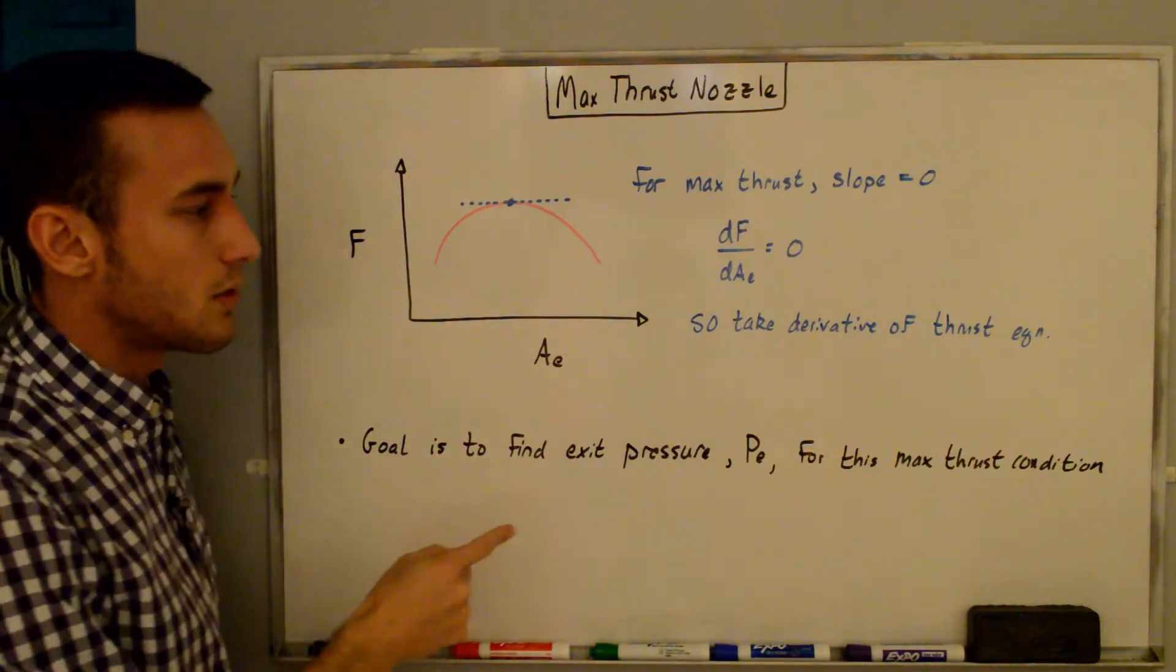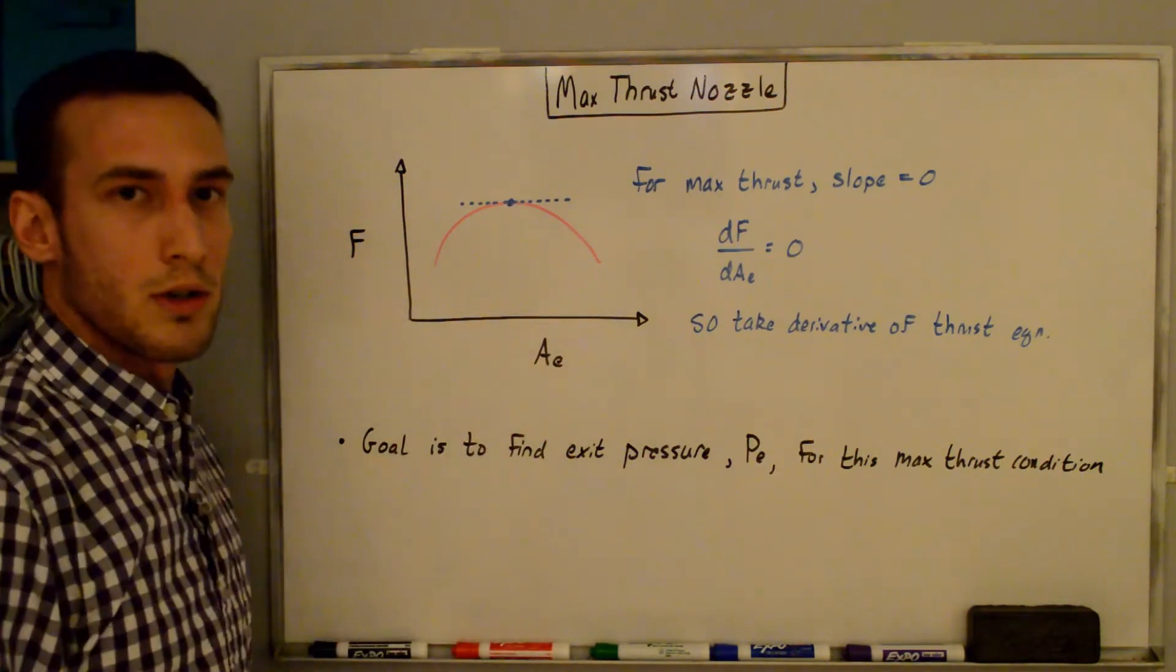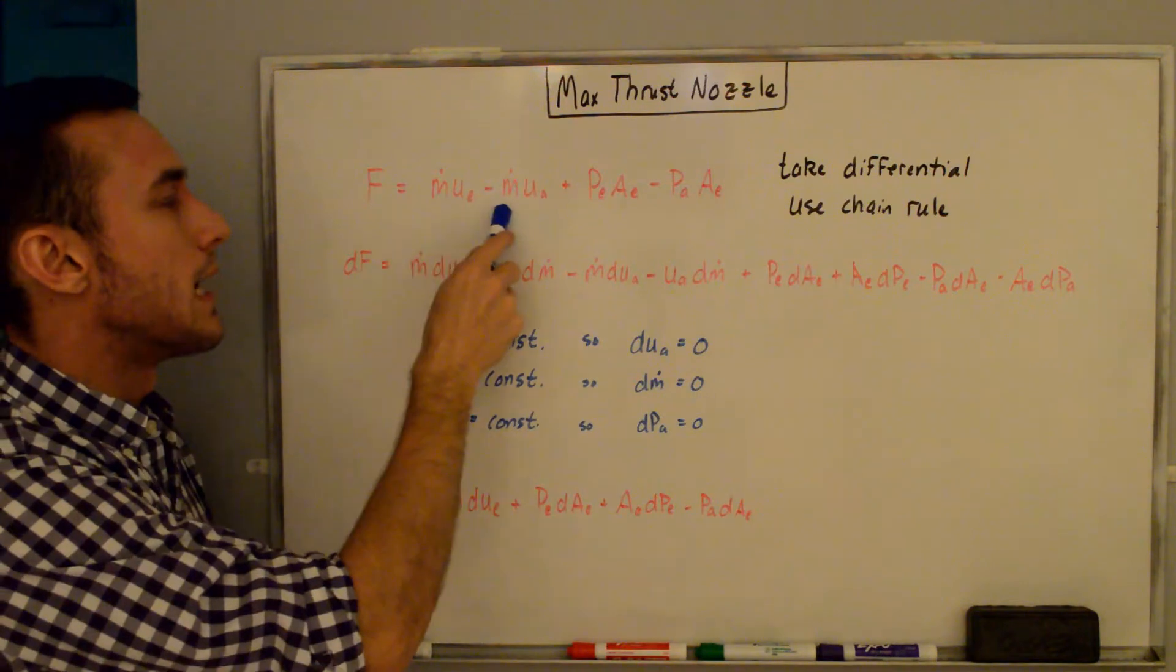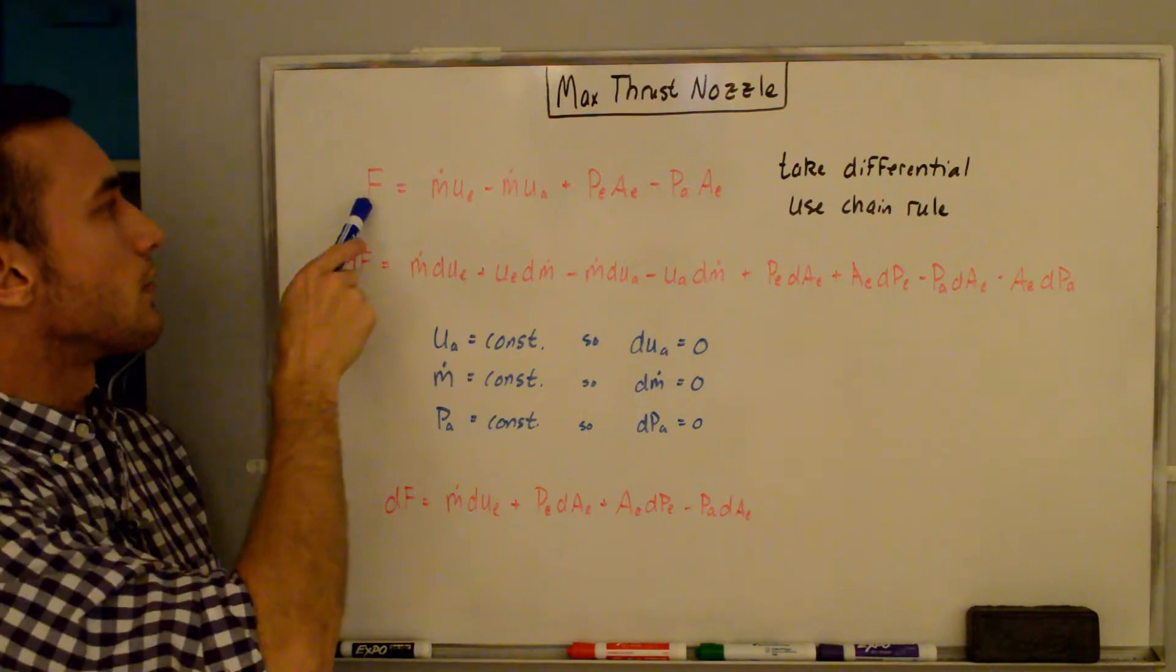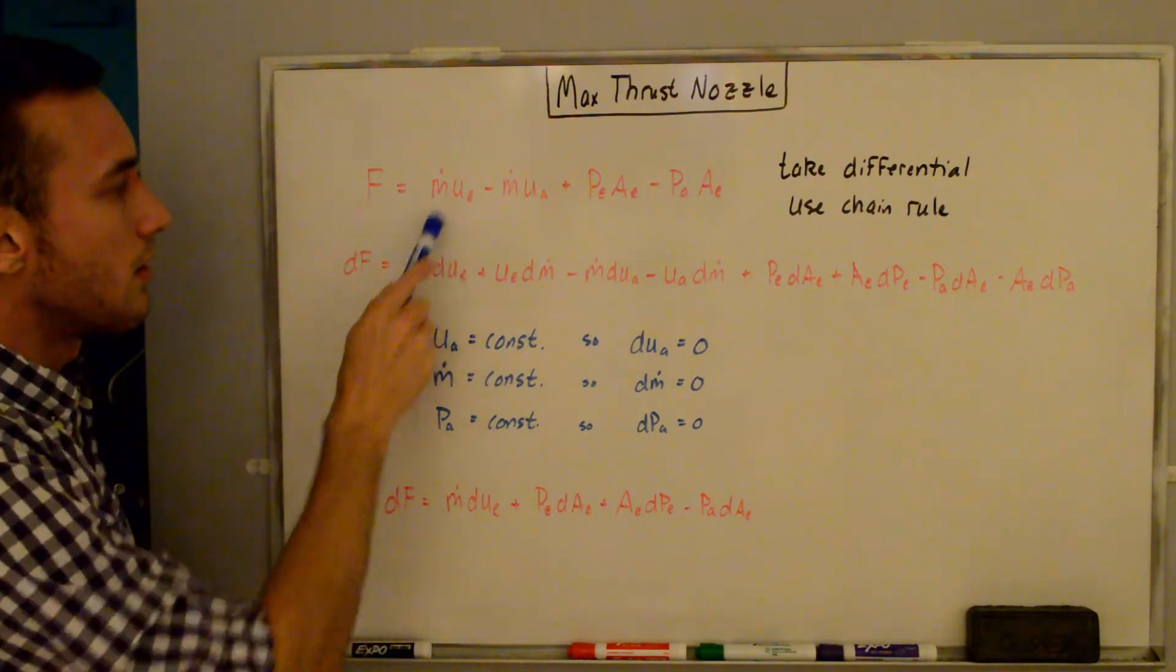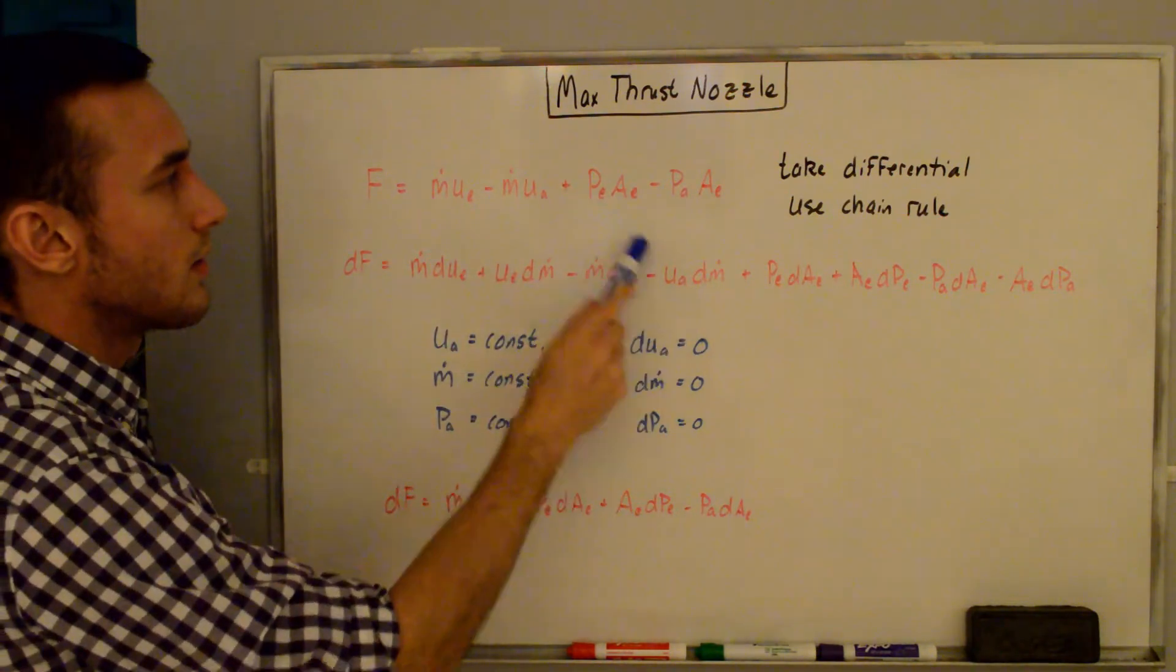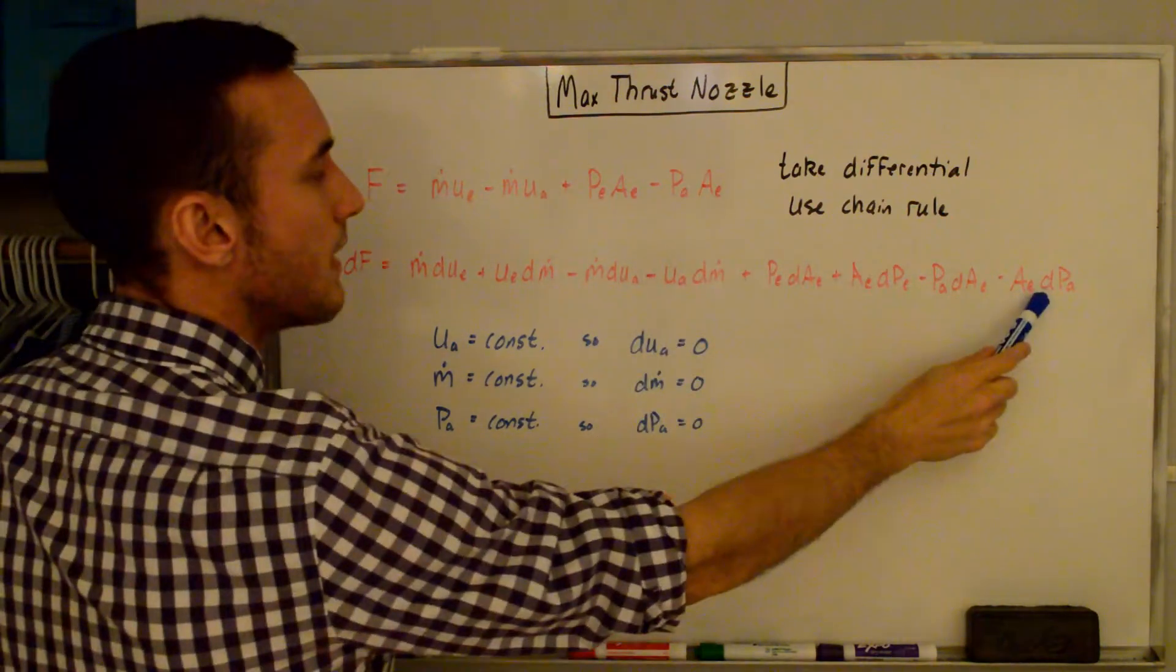So I've rewritten the thrust equation up here, and I've just factored through the ṁ to both and AE to both terms, and we're going to take the differential using the chain rule. So we're going to start off over here. We just have dF. On the right-hand side, we have this term expands out into this and this, this term to this and this, this term to this and this, and this term to this and this.